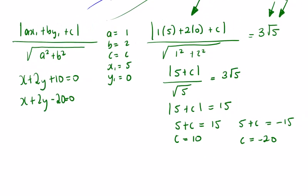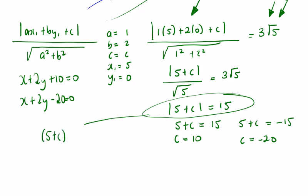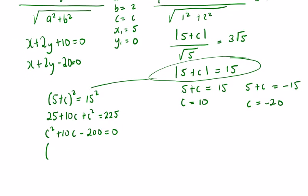We can also solve by squaring both sides: (5 + c)² = 15², giving 25 + 10c + c² = 225, so c² + 10c − 200 = 0. Factoring: (c + 20)(c − 10) = 0, giving c equals 10 or c equals −20 — the same answers as before.